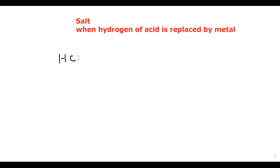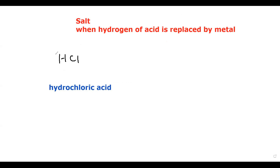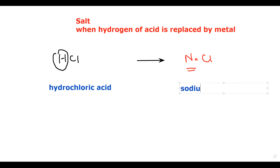For example, HCl is known as hydrochloric acid. But when this hydrogen is replaced by any metal — like sodium, calcium, or magnesium — that hydrogen is replaced by the metal. So instead of hydrogen, if a metal is present, we call that a salt. In this case, sodium chloride is the salt.